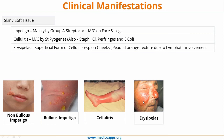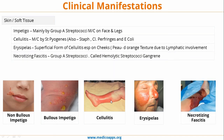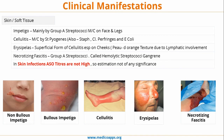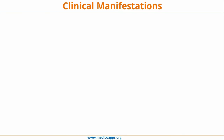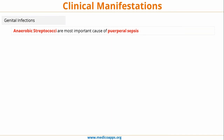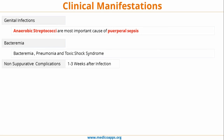You can see the peau d'orange texture in the image. Differences between cellulitis and erysipelas: cellulitis is generally found in the legs, whereas erysipelas is limited to cheeks and nasal bridge. Erysipelas is more self-limiting; cellulitis if not treated may lead to necrosis. The most severe is necrotizing fasciitis, caused by Group A streptococci, also called hemolytic streptococcal gangrene. In skin infections, ASO titers are not high, so ASO estimation is of no significance — ASO titers are mostly increased in pharyngeal infections, not skin or soft tissue infections.